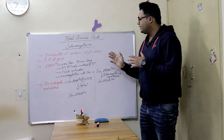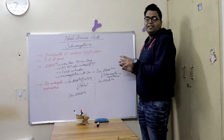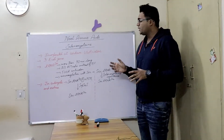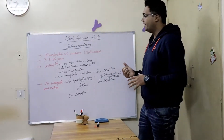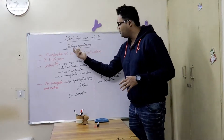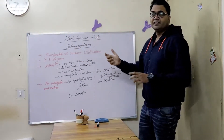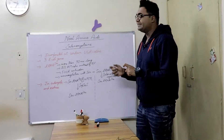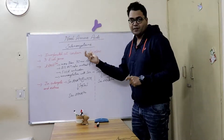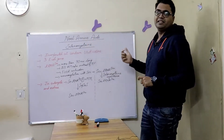We all know that cysteine is an amino acid which contains sulphur. In selenocysteine, the sulphur is replaced by selenium, so it becomes selenocysteine.